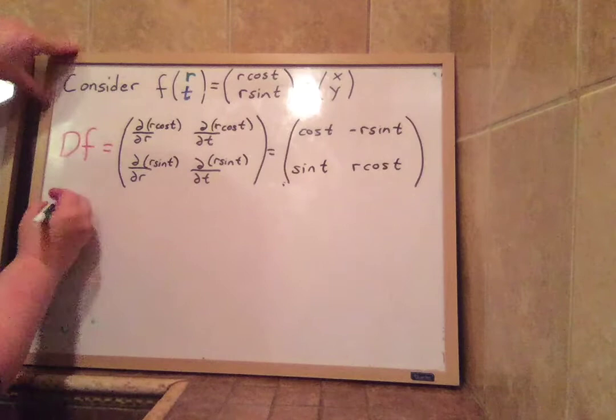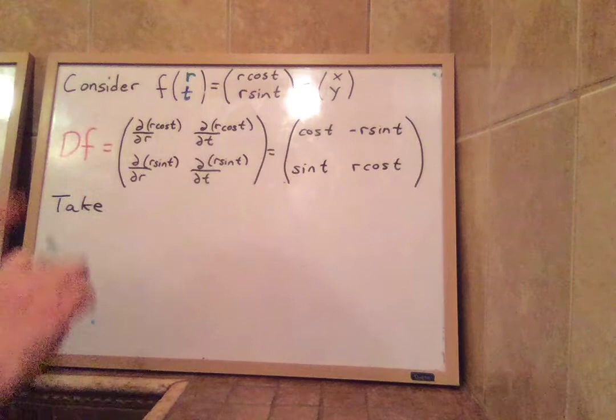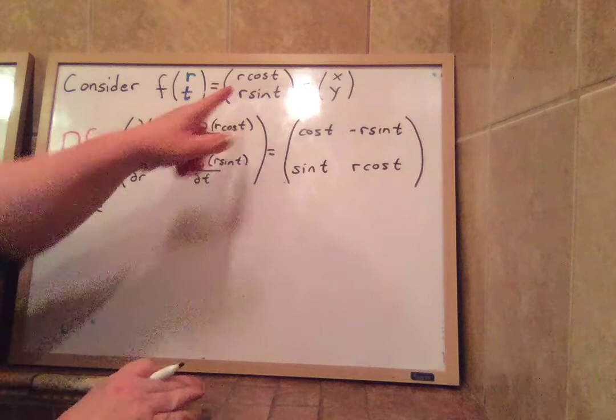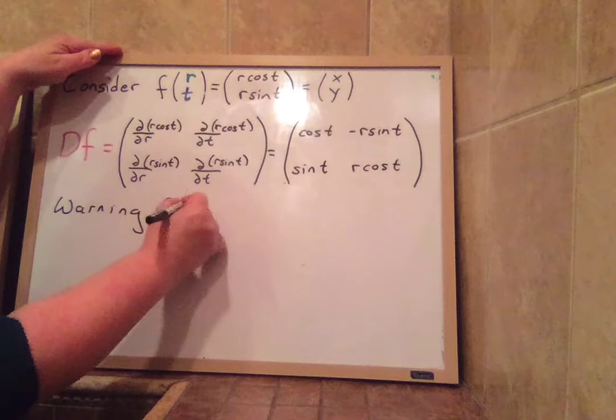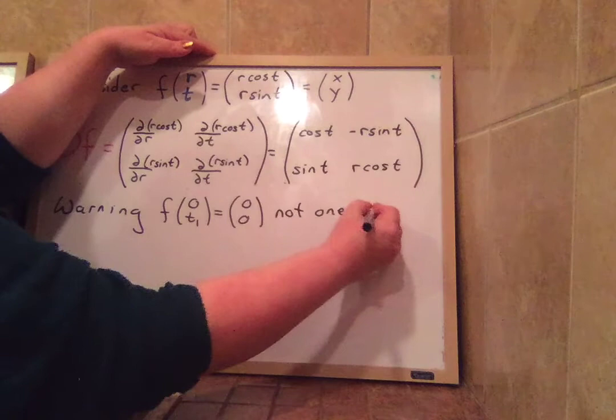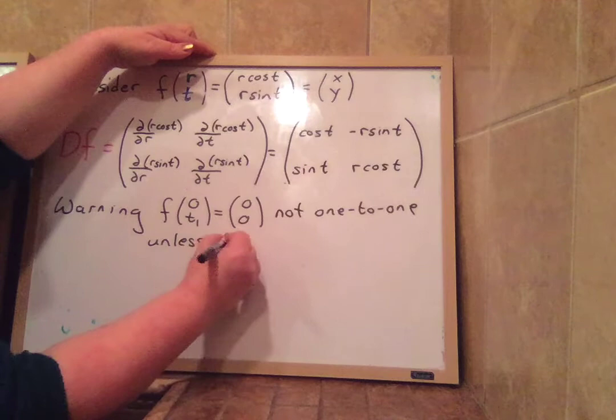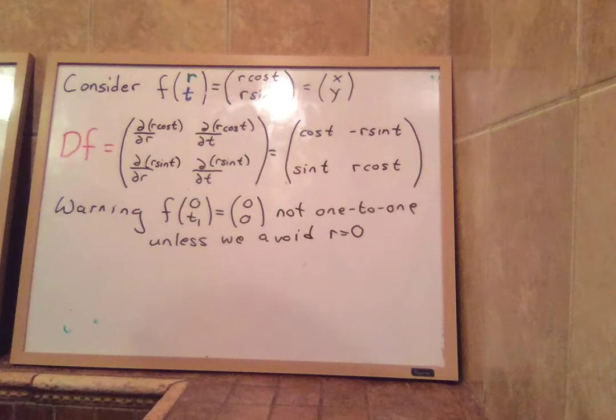Let's just take a sample domain. Now it doesn't matter what domain we take as far as being differentiable. This is differentiable everywhere. But I want to take, I have to be a little careful with my domains because this is the one that's wrapping things around. So there's going to be a problem. This won't be one-to-one if we include the points. Let's say the warning that f of zero and any t1 is equal to zero, zero. So it's not one-to-one unless we avoid rt equal to zero. So radius zero, all the angles go to the same point. So if we want to have the one-to-one part, we're going to have to avoid the r equals zero.